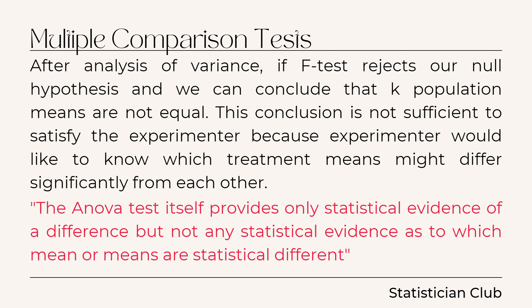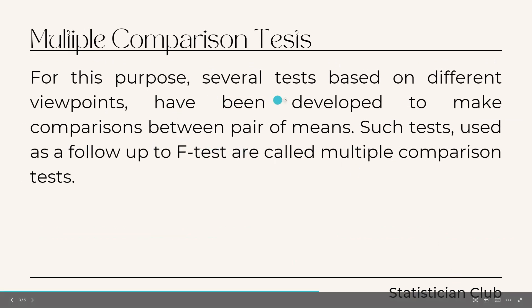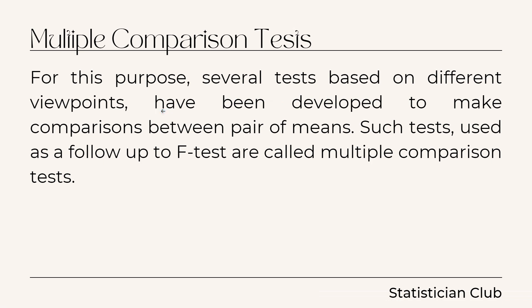For the purpose of finding which means differ from which, we use multiple comparison tests. The ANOVA test itself provides only statistical evidence of a difference, but not any statistical evidence as to which means are statistically different. Several tests based on different viewpoints have been developed to make comparisons between pairs of means. Such tests are used as a follow-up to the F-test, and these tests are called multiple comparison tests.